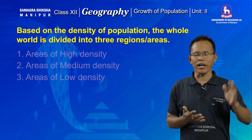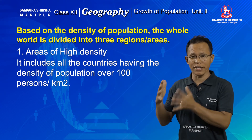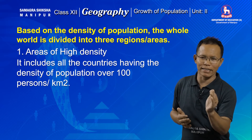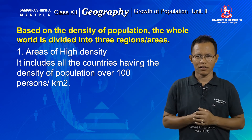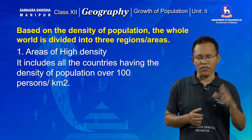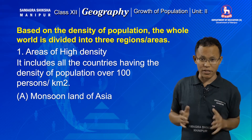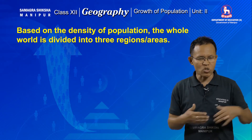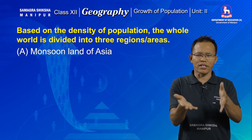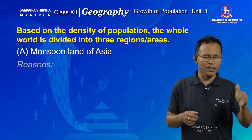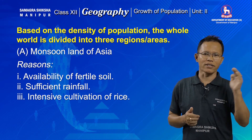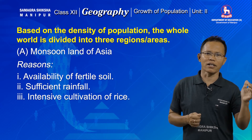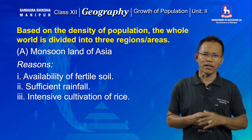Areas of high density are those regions of the world where population density — the number of people living per unit area of land — is more than 100 persons per unit area. There are three regions belonging to areas of high density population. The first is the Monsoon land of Asia. The factors supporting higher density in Monsoon land of Asia are: availability of great water and soil resources, heavy rainfall, and intensive rice cultivation.